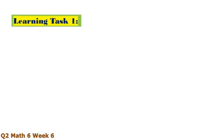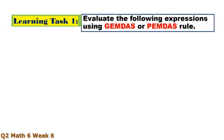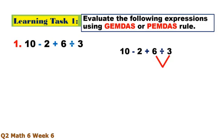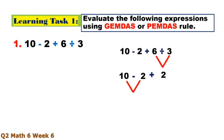Let's look at Task 1. Evaluate the following expressions using PEMDAS rule. First expression — division first: 6 divided by 3 equals 2. Next is subtraction: 10 minus 2 equals 8, plus 8 equals 16.